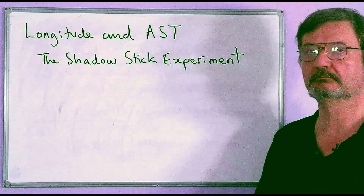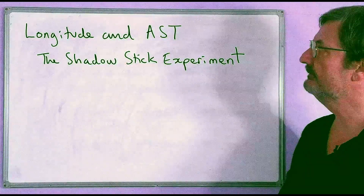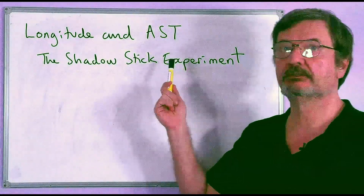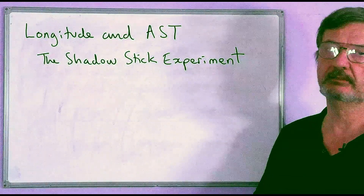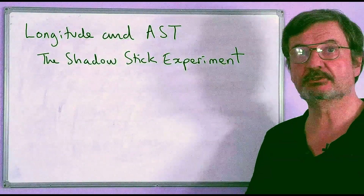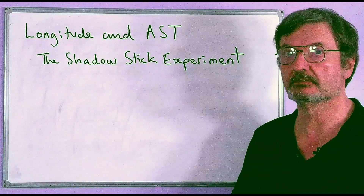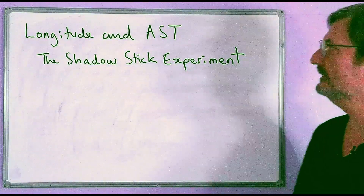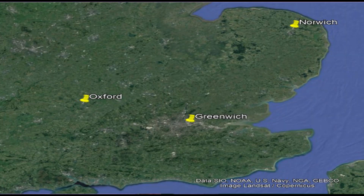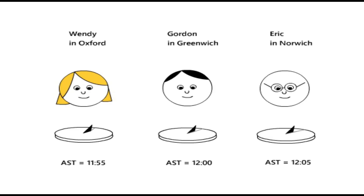In this video I'd like to talk about the relationship between your apparent solar time and your longitude. If you haven't seen my video about the equation of time and you're not 100% sure about what the equation of time is, I suggest you watch that first. Imagine there are three people: Wendy who lives in Oxford, Gordon who lives in Greenwich, and Eric who lives in Norwich. All three of them have a sundial, and one day they all go out at exactly the same time and look at their sundials.